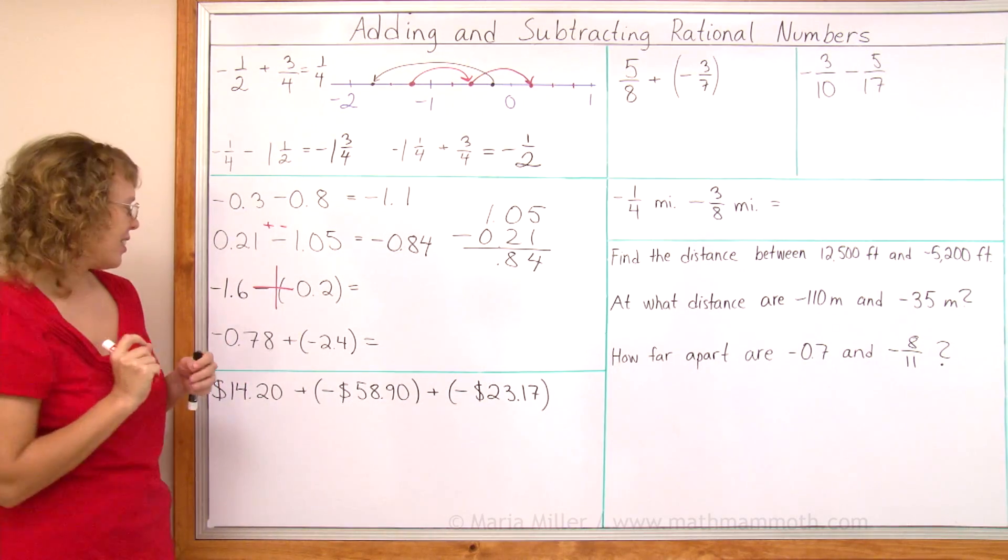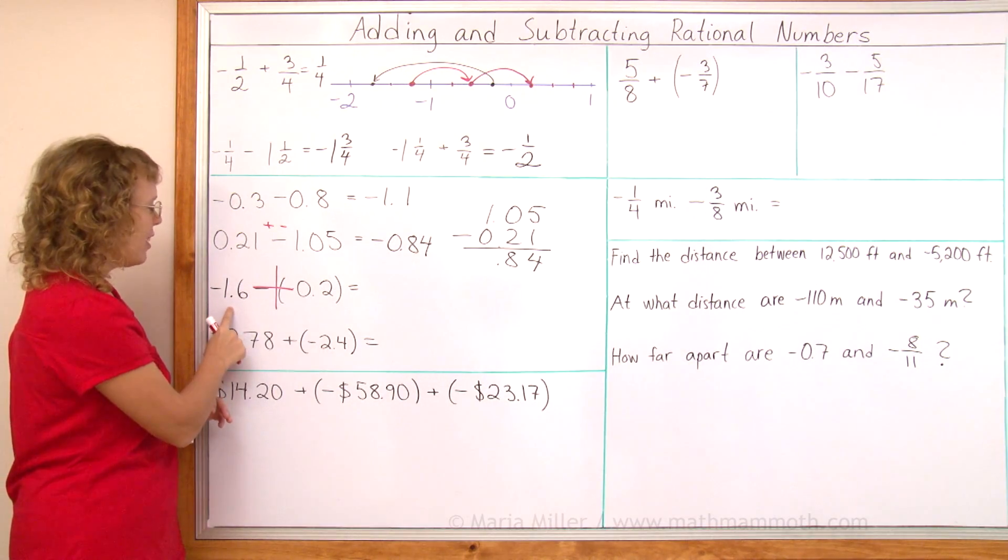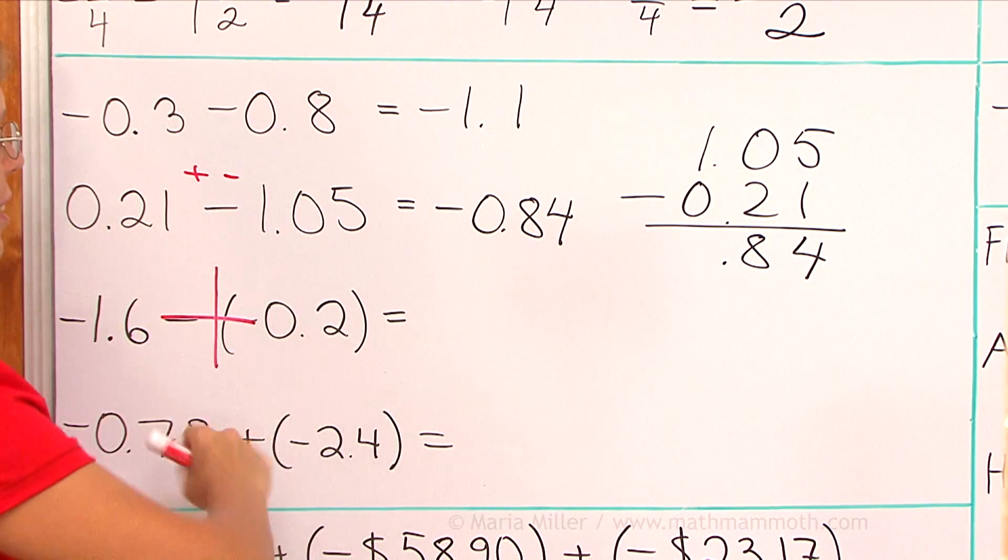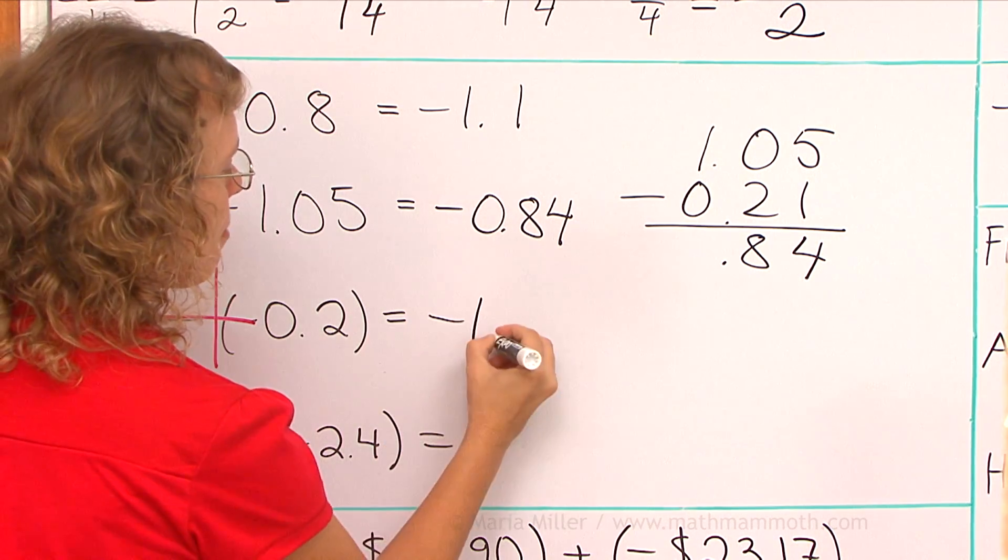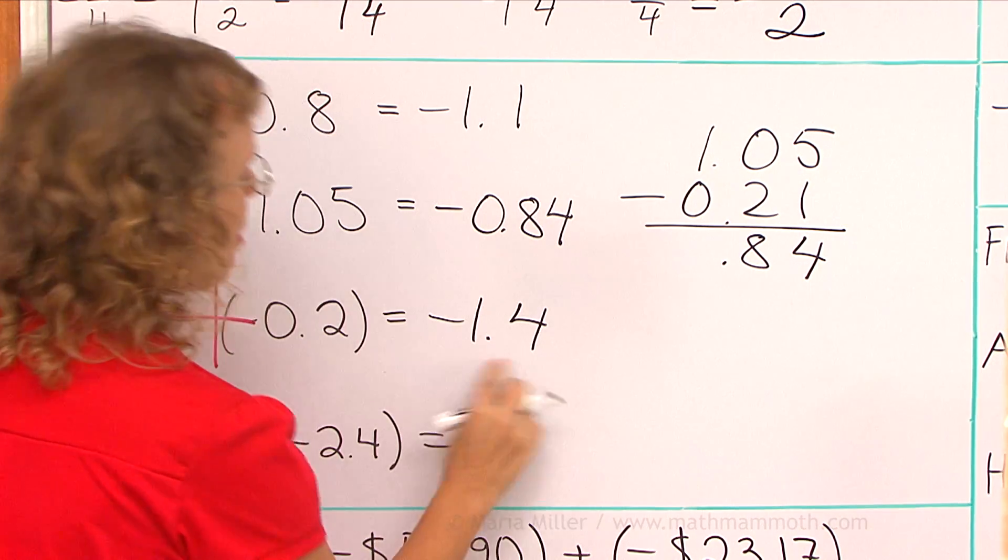I think of this like a number line problem. I'm here, and then I move two-tenths to the right towards the positives. So my answer is less negative. And I get negative 1.4.